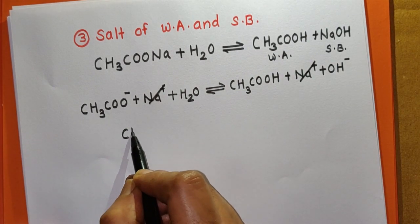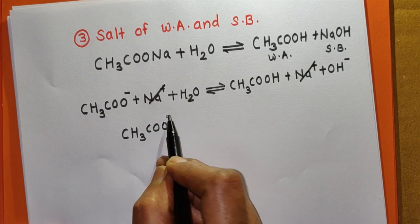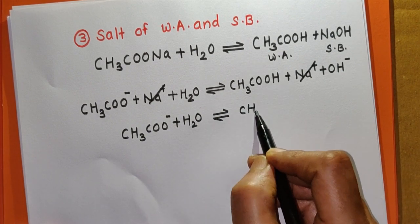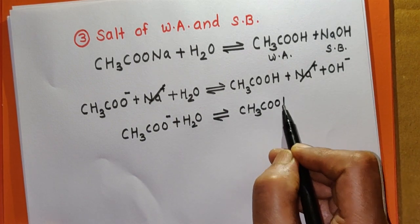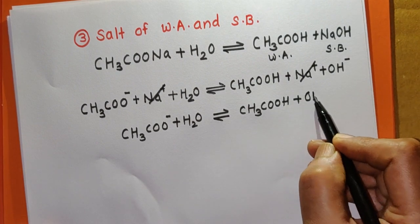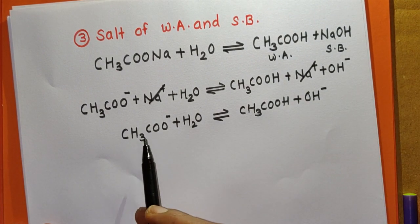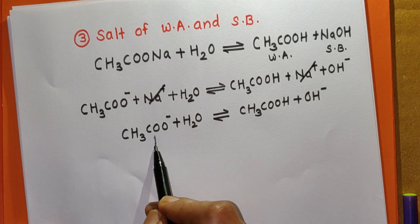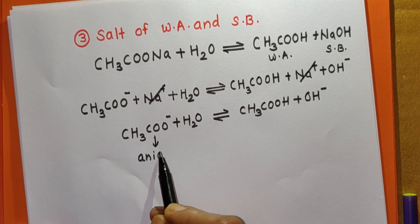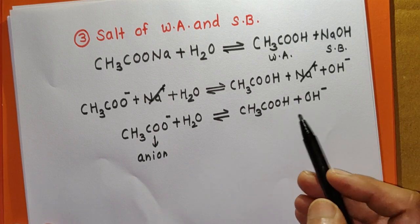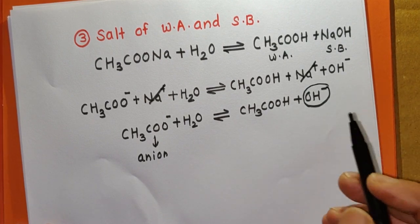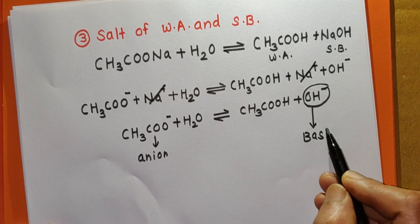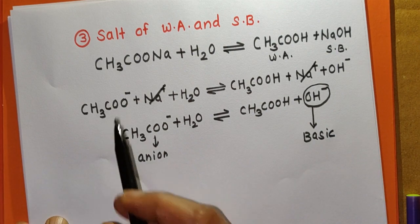After cancelling Na⁺ ions, the net reaction is: CH₃COO⁻ + H₂O → CH₃COOH (weak acid) + OH⁻. The CH₃COO⁻ anion of the salt reacts with water. Since OH⁻ ions are free in the solution, the solution becomes basic in nature.